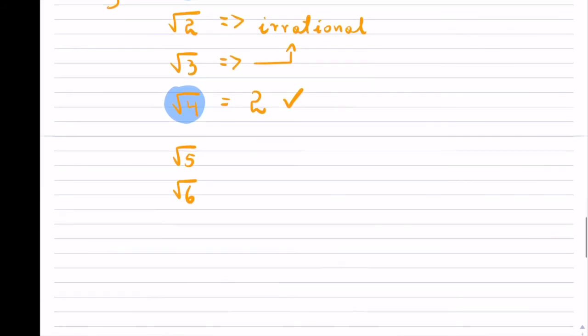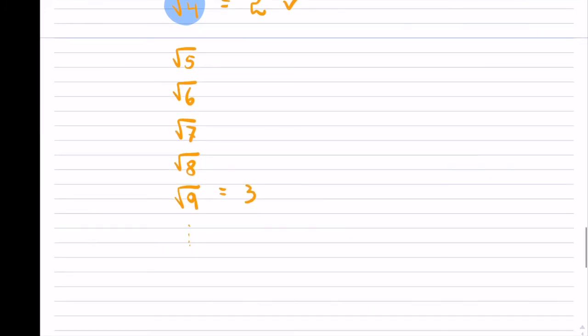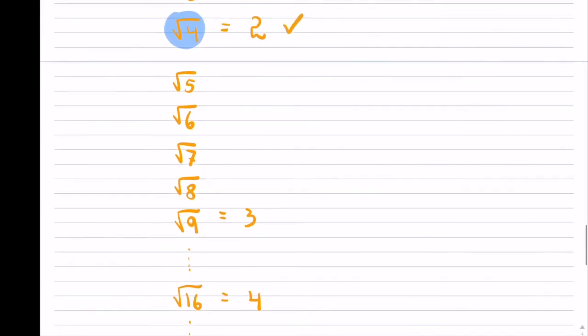And if I would continue this, square root of 7, square root of 8, and then square root of 9, which is equal to 3. And then it would continue on. Next one would be square root of 16, which is 4. And then so on. Square root of 25, which is 5. That's what we mean by a perfect square, that you can actually find the square root of it.